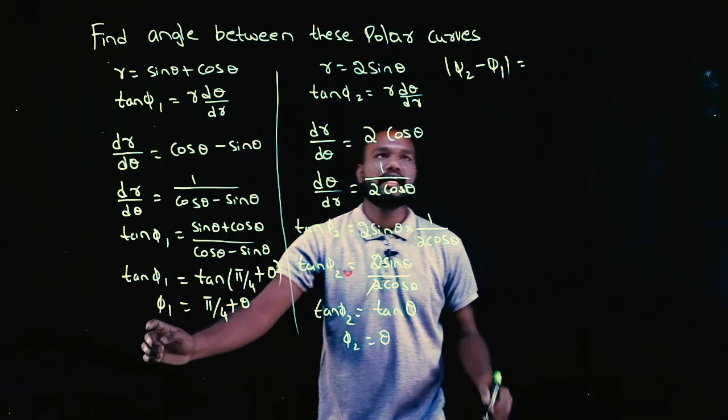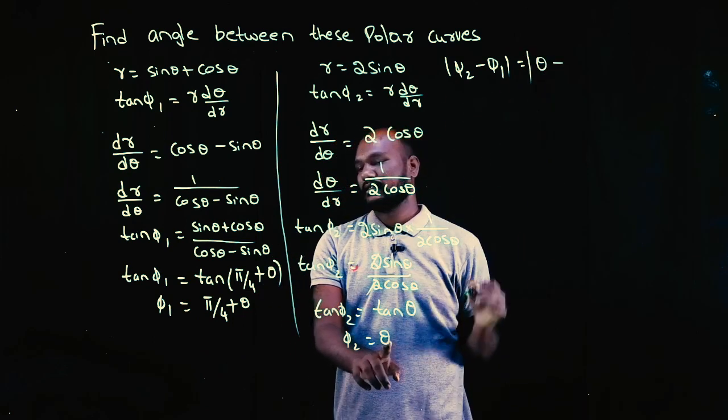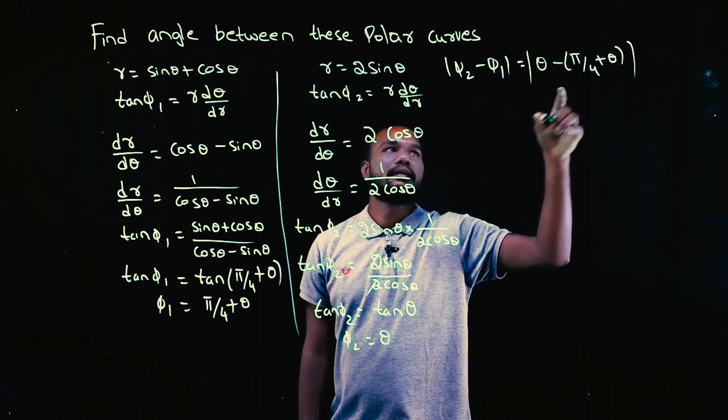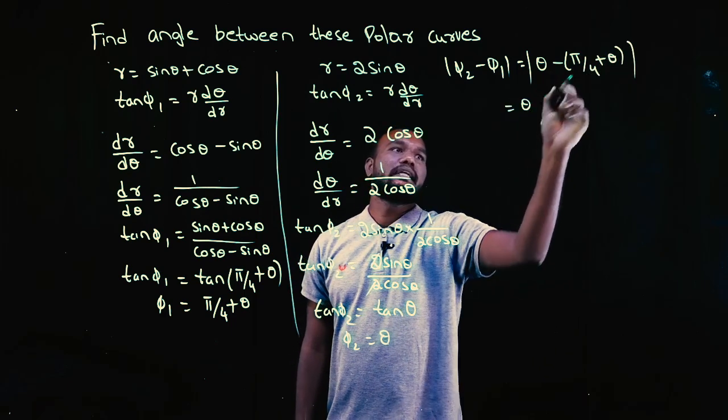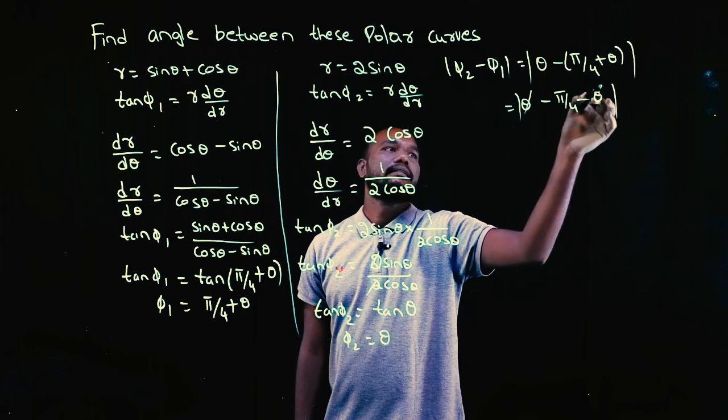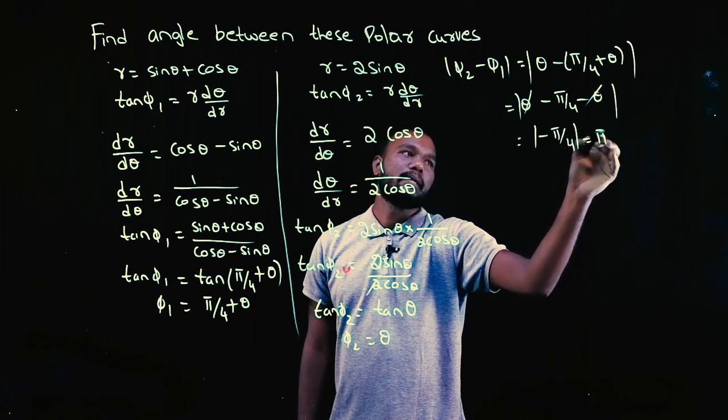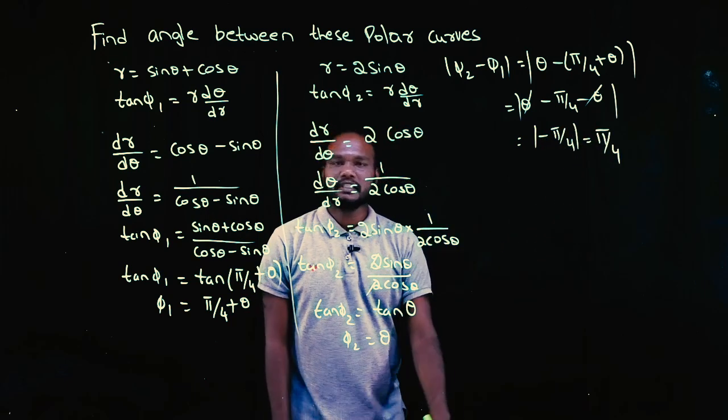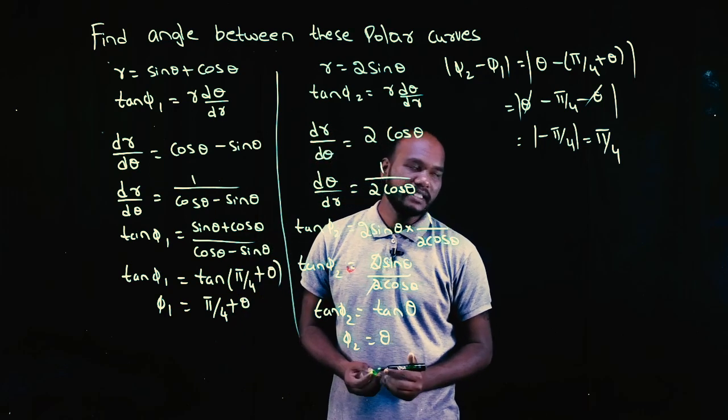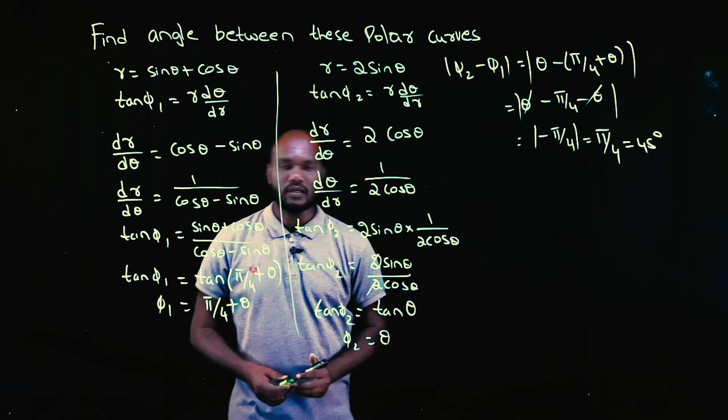So phi 2 we have, phi 1 we have. We do phi 2 minus phi 1. That is theta minus pi by 4 plus theta, so theta minus pi by 4 minus theta. Thetas get cancelled. Modulus of minus pi by 4 is pi by 4. The angle between them is pi by 4 radians, that is 45 degrees.